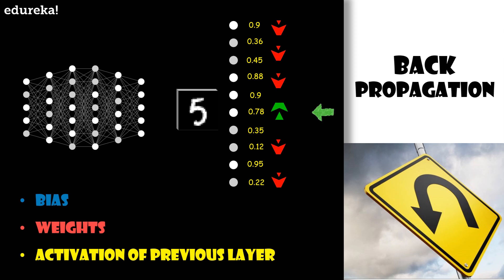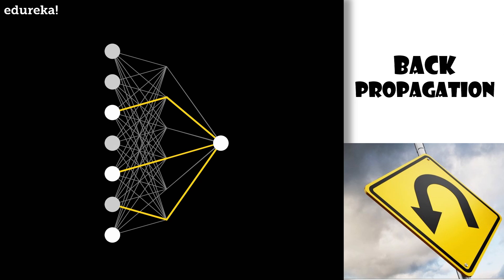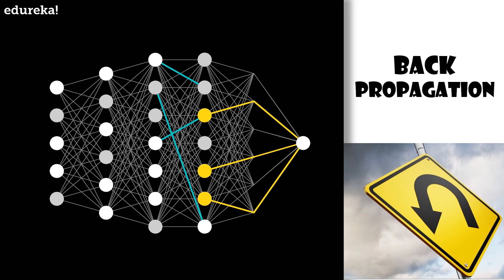But just as with the last layer, it is helpful to keep a note of what those desired changes are. But these changes are being made only for the digit 5. We also want all the other neurons in the last layer to become less active, and each of those other output neurons has its own thoughts about what should happen to the second last layer. So the desire of this digit 5 neuron is added together with the desires of all the other output neurons for what should happen to the second to last layer, again in proportion to the corresponding weights and in proportion to how much each of those neurons needs to change.